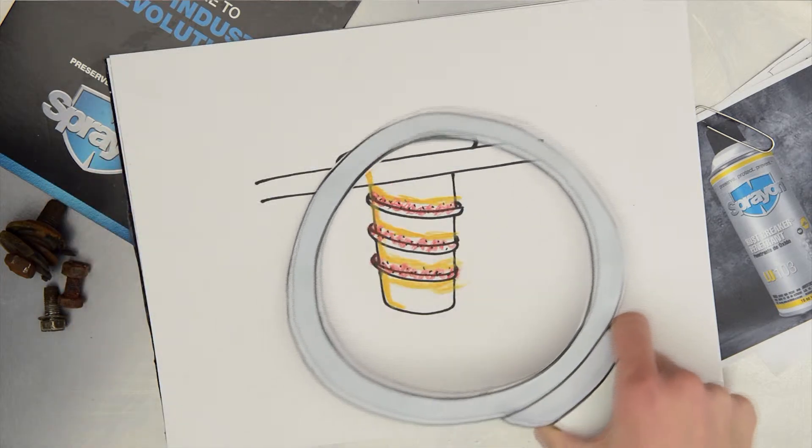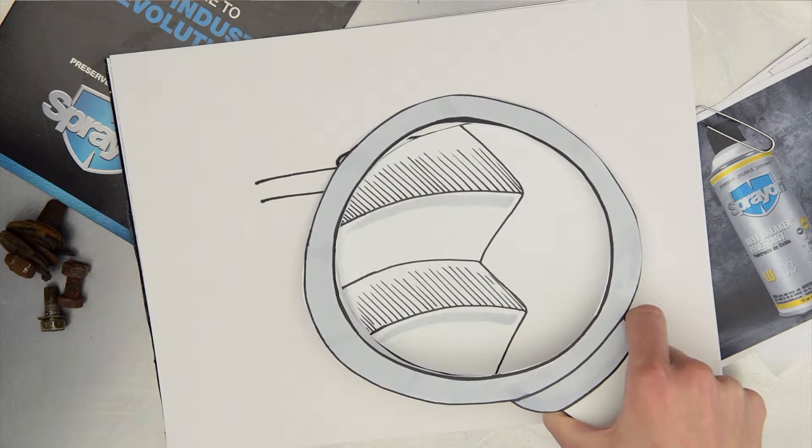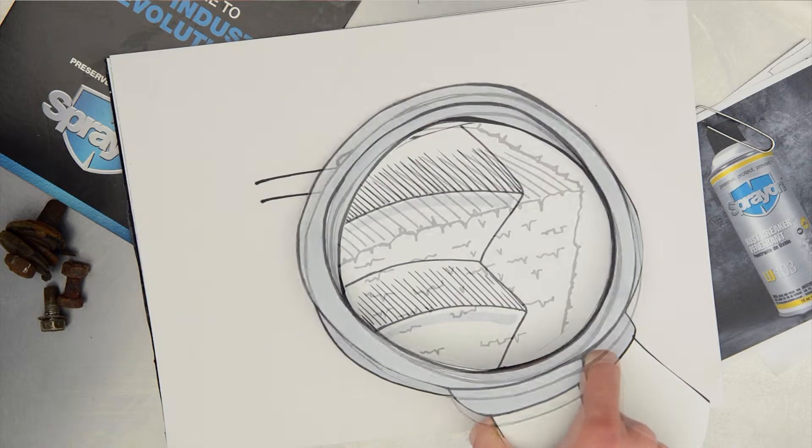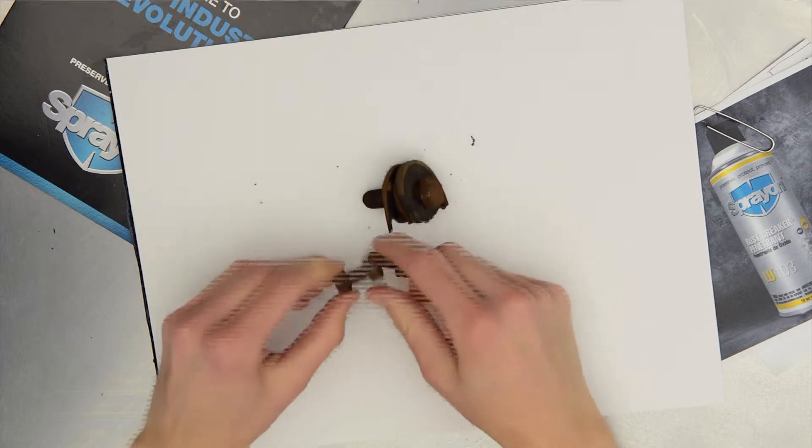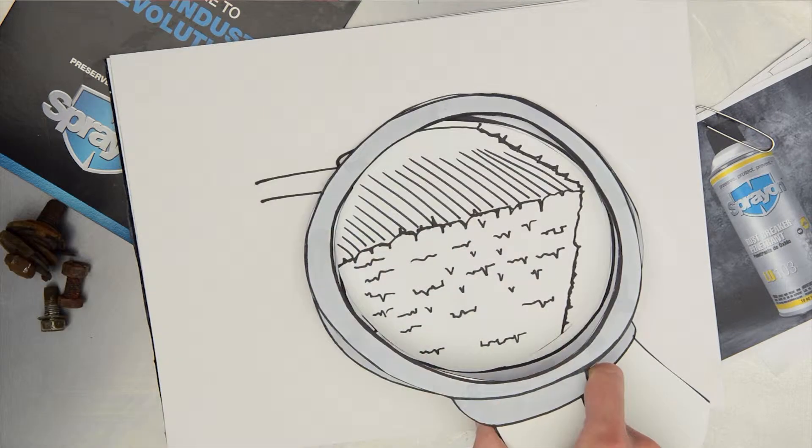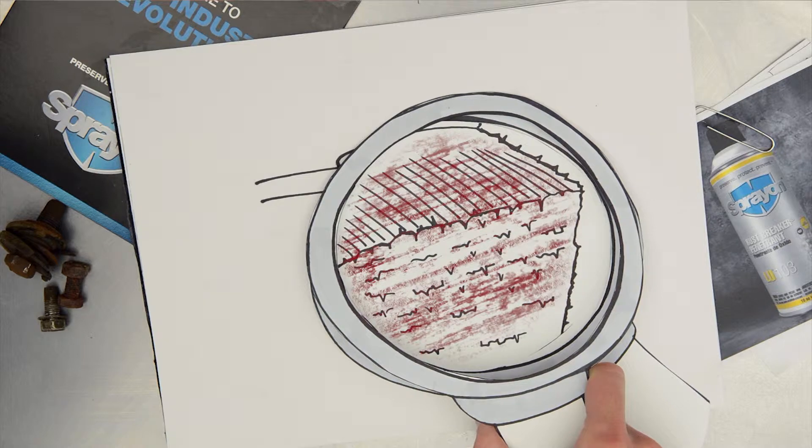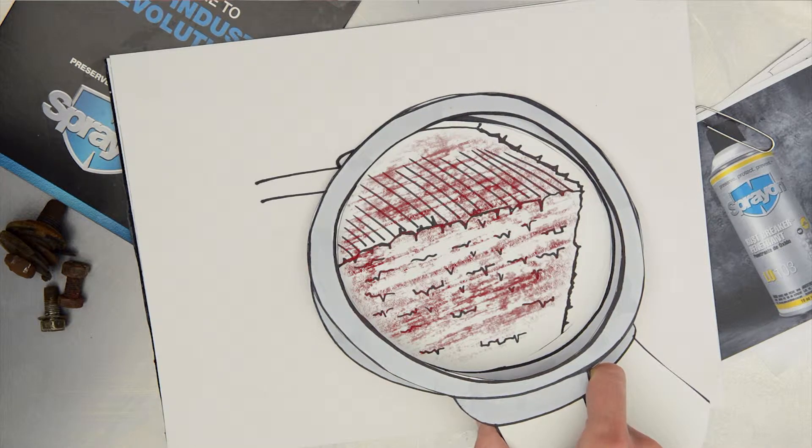At the microscopic level, oxidation in fasteners leaves the threads pitted and scarred. These irregularities mechanically lock the threads into place. Rust then fills those irregularities and acts like sand to increase friction between the threads.